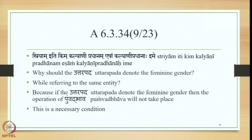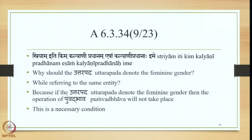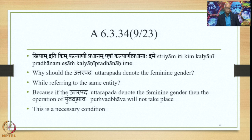Similarly, the next Pratyadaharana is Striyam Itikim. Here the Prasnodhishta Shabda is Striyam. Kalyani Pradhanaha is the Pratyadaharana which wouldn't have been generated if the word Striyam were absent from Sutra 6.3.34. The question here is: why should the Uttarapada denote the feminine gender while referring to the same entity in order for the Pumbad Bhava to take place? The simple answer is: because if the Uttarapada does not denote the feminine gender, then the operation of Pumbad Bhava will not take place. This is a necessary condition.